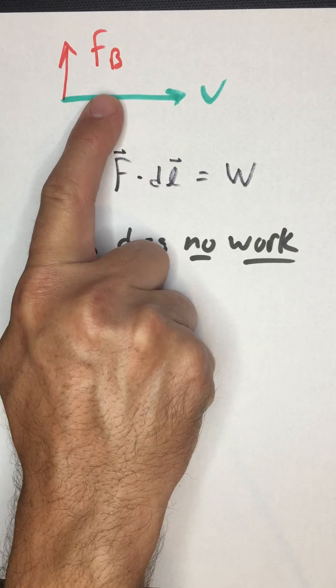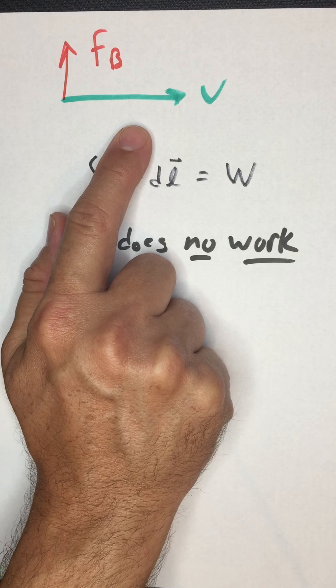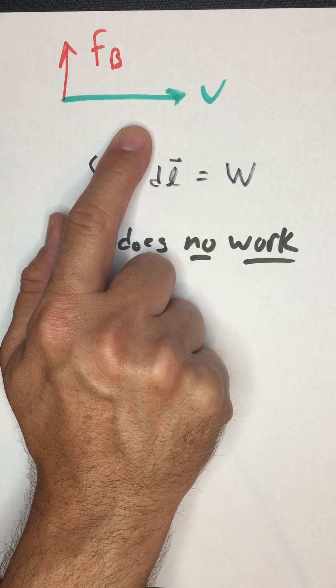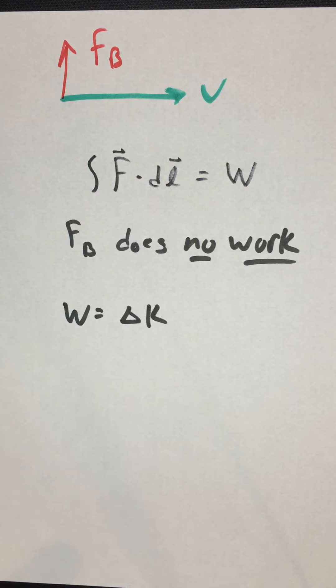And we've already seen that because the force is acting perpendicular to the velocity, the speed never changes. The direction of this will change. The speed will never change.